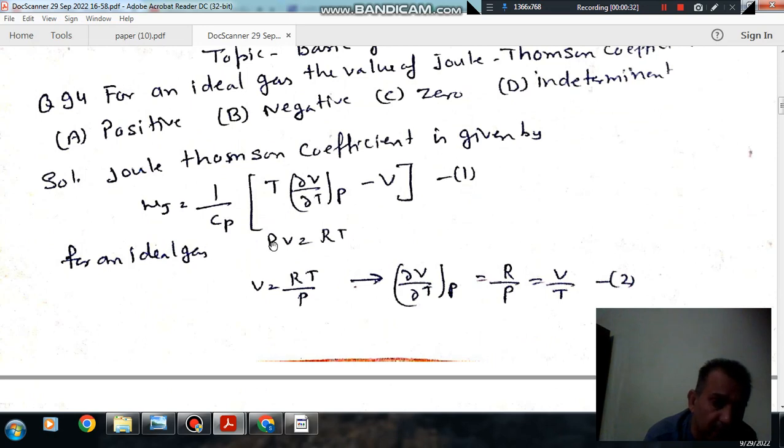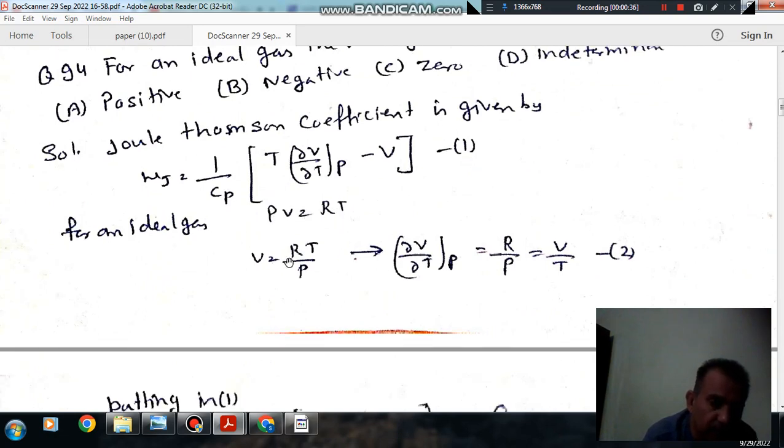PV is equal to mRT. Taking m equal to 1, so V will be RT/P. If we differentiate with respect to T, then (∂V/∂T) at constant pressure...